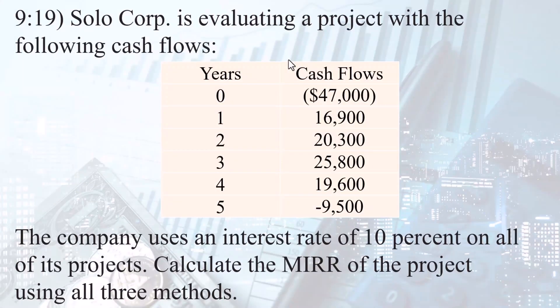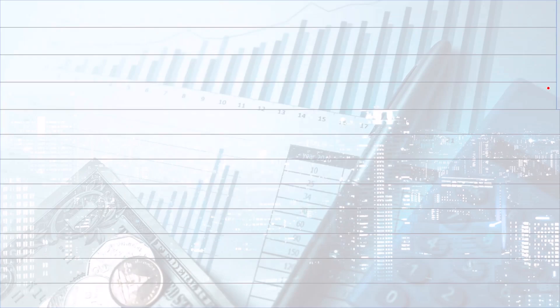Solo Corporation is evaluating a project with the following cash flows: year zero initial investment of 47,000, then four years of positive cash flows, and in the last year there is a 9,500 outflow. The company uses an interest rate of 10% on all of its projects. Calculate the MIRR using all three methods.